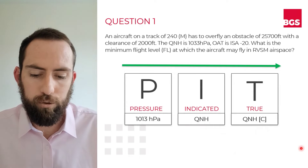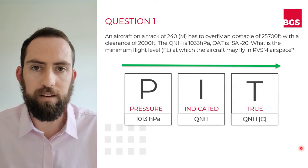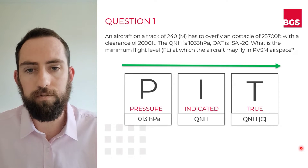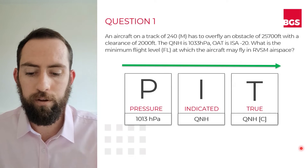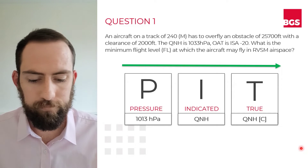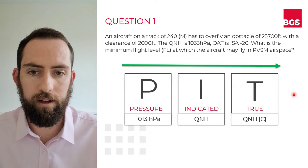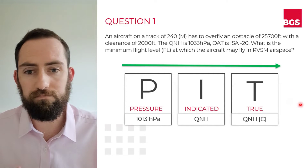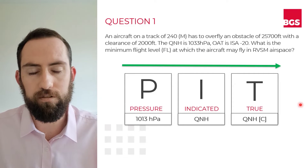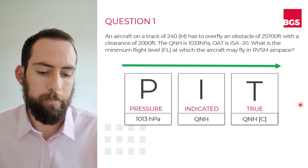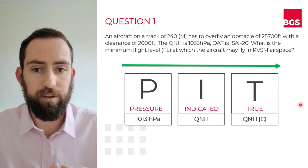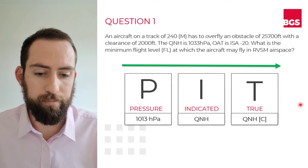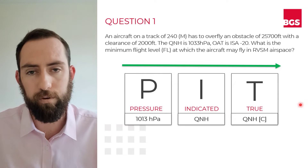Why would that be? Your altimeter is a bit of a flawed device in that it is calibrated according to the International Standard Atmosphere. According to ISA, in the lower layers of the atmosphere, your pressure should fall off at a rate of one hectopascal per 27 feet. So your altimeter will, when it detects a pressure reduction of one hectopascal, think it has gone up by 27 feet. The trouble is that more often than not, conditions are not conducive to the International Standard Atmosphere. When conditions are warmer than ISA, the atmosphere tends to expand and pressure falls off slower with altitude, and the reverse happens in conditions colder than ISA, where the atmosphere contracts and pressure falls off quite quickly with altitude.